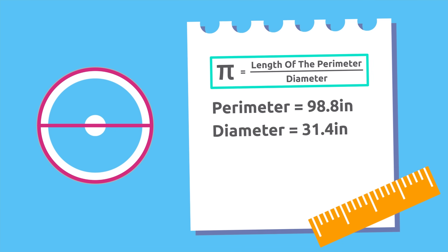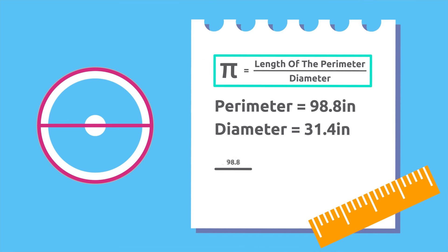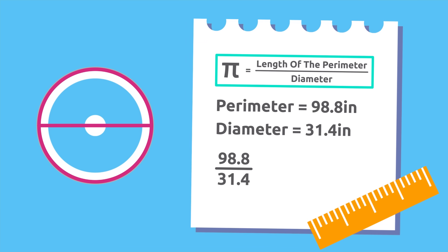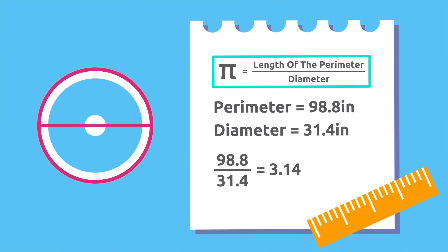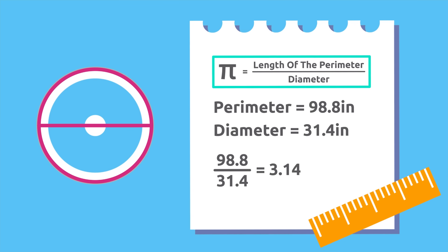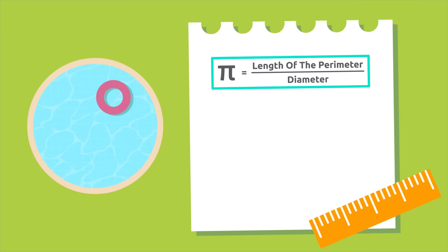Now measure the perimeter of this swimming pool. Divide the length by its diameter and you'll also get 3.14.